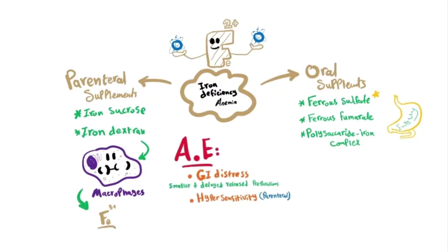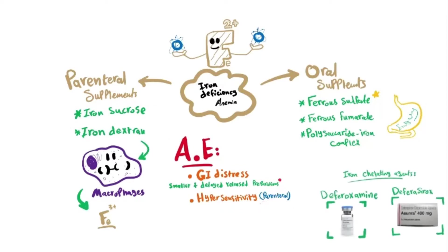The adverse effects of these drugs are generally GI distress — nausea and pain. Ferrous sulfate, the most used one, is famous for causing constipation among all GI problems. We can generally avoid those by giving small doses and using delayed-release preparations. Regarding parenteral preparations, hypersensitivity is also an issue. If adverse effects are severe, we can use iron chelating agents: deferoxamine, which is IV, or the tablets deferasirox.